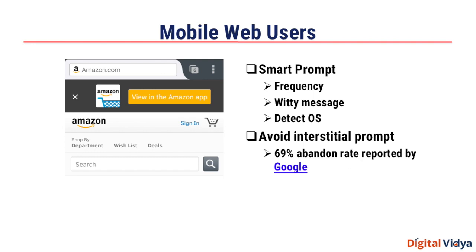The second part is the message you show to users. You have to view it as an ad. If it's something very plain and banal, it probably won't be effective. If there's a witty message or an explanation of why the app offers a better experience, your chances of conversion will be higher. The third is that, given the user is on your mobile site, you can detect what operating system they're on — whether iPhone or Android — and what version of the OS they're using.